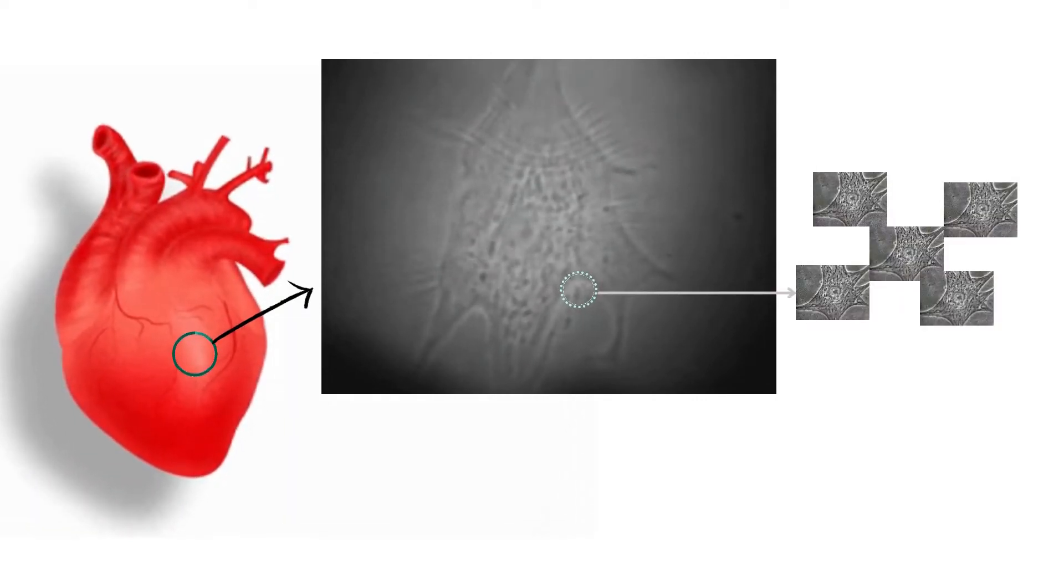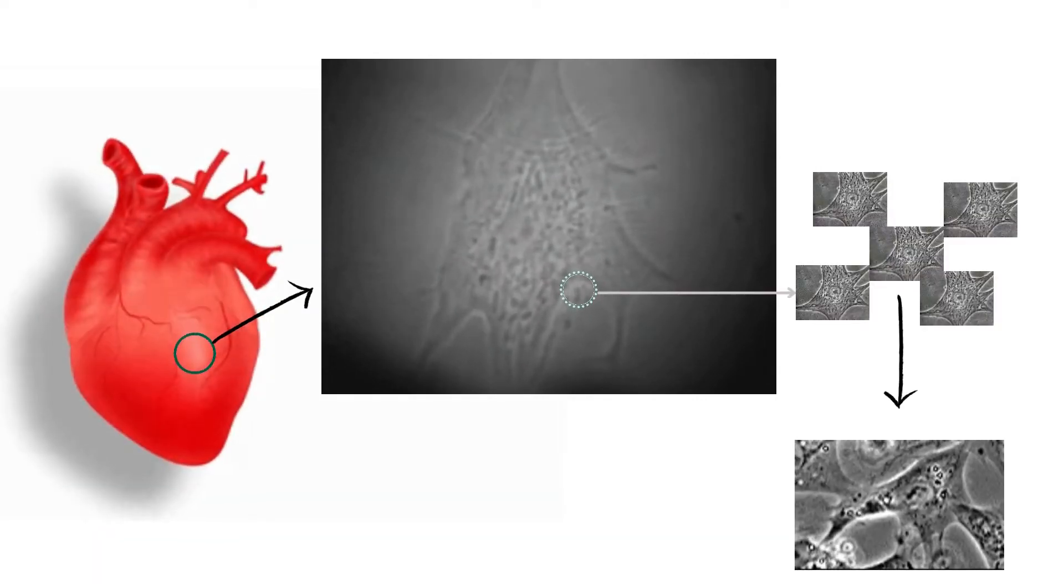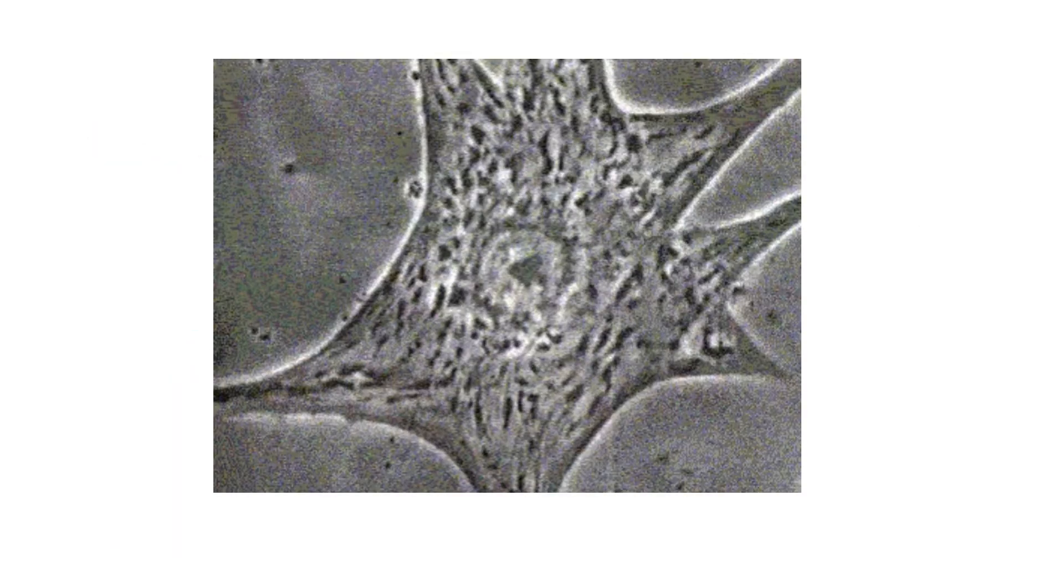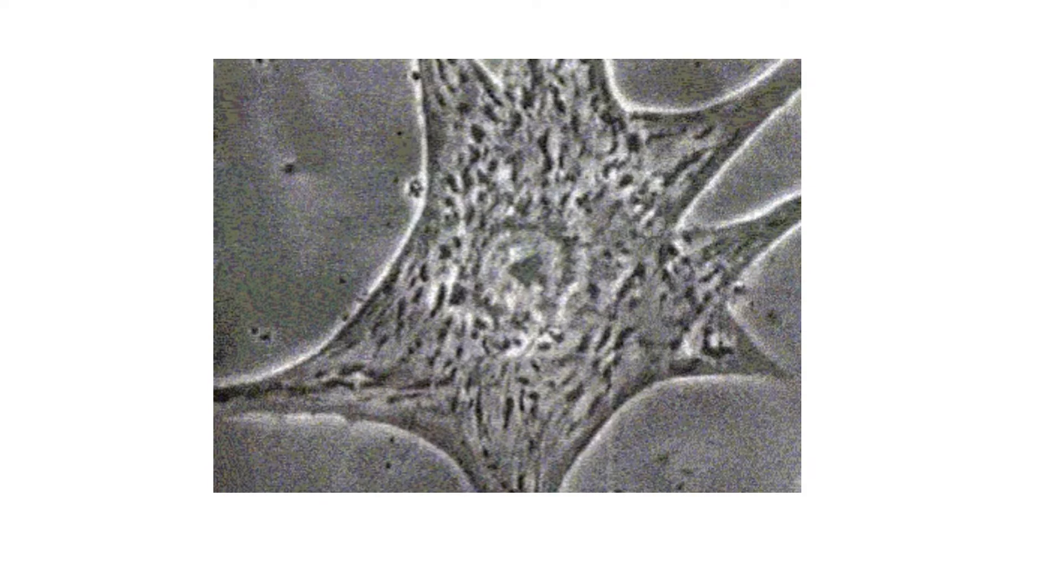This is called beating in unison. As long as the beating cells do not touch one another, their beats are independent. Some are faster, some are slower.